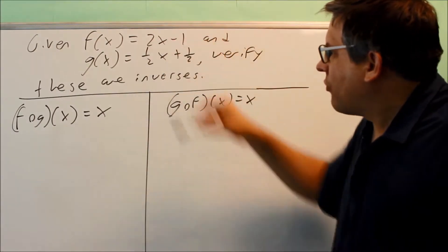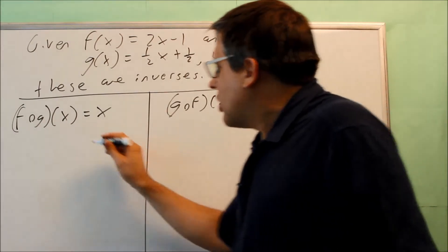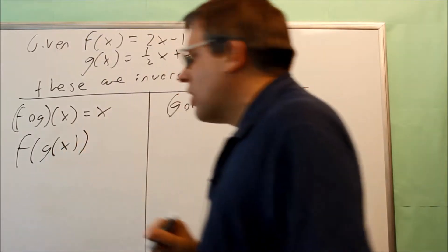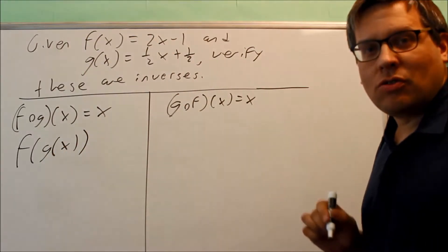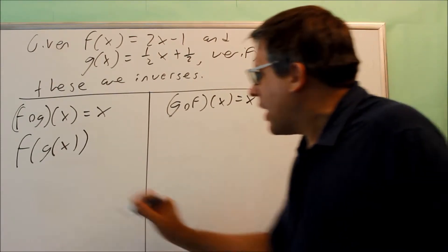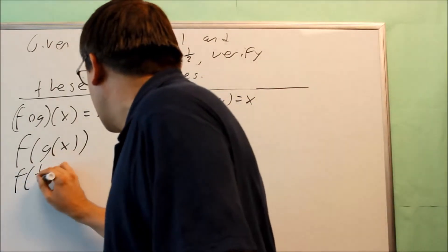So I have our f and g right here, and from previous section, we know that f of g of x is equal to this. We want to put the g into the f. So g is one-half x plus one-half. That's going to go inside here.